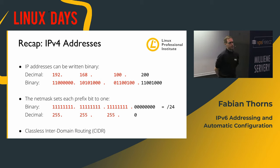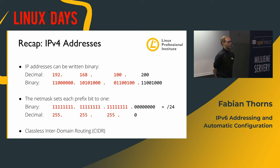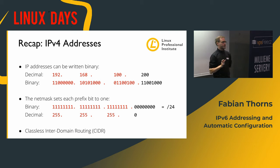The netmask in binary notation sets a 1 to every bit that belongs to the network and a 0 to every bit that belongs to the node. When you count the binary ones, you get something called CIDR - classless inter-domain routing notation. That's a way to write down the netmask just by specifying how many ones it contains. Since all the ones are on the left-hand side and zeros on the right, the pure count of ones is sufficient to determine what part of the address is the host and what part is the network. IPv6 heavily uses CIDR notation.